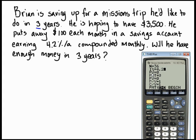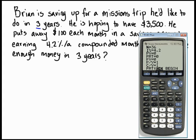PV stands for present value. If he were dumping in, say, $2,000 into an account, we'd put negative 2,000 — because he's paying that money away, so it would be negative. On this kind of calculator, you put that as negative, not minus. In this question, though, he's not doing a lump sum into an account; he's doing a regular payment of $100 each month. So present value is going to stay at zero, and PMT — payment — is going to be negative 100.